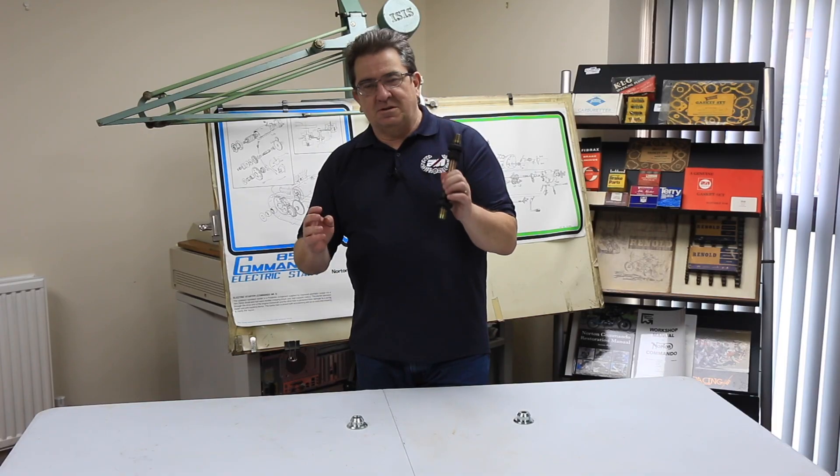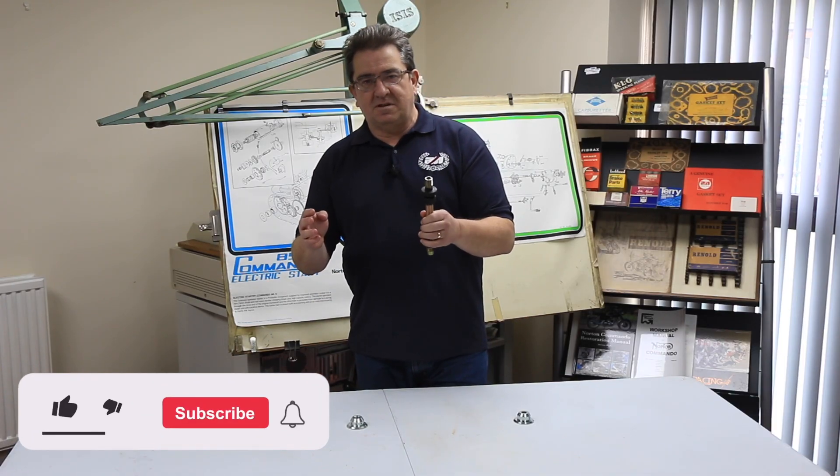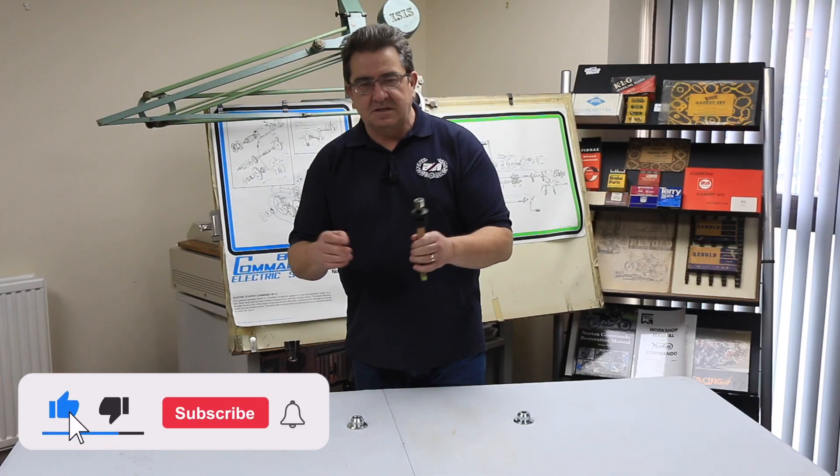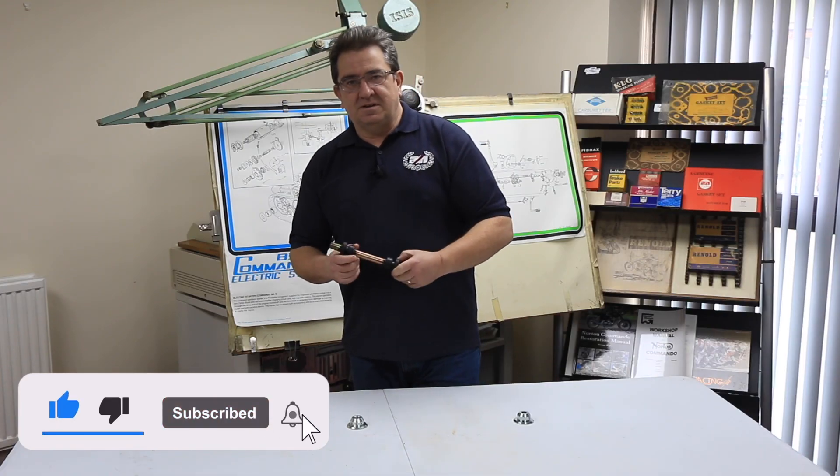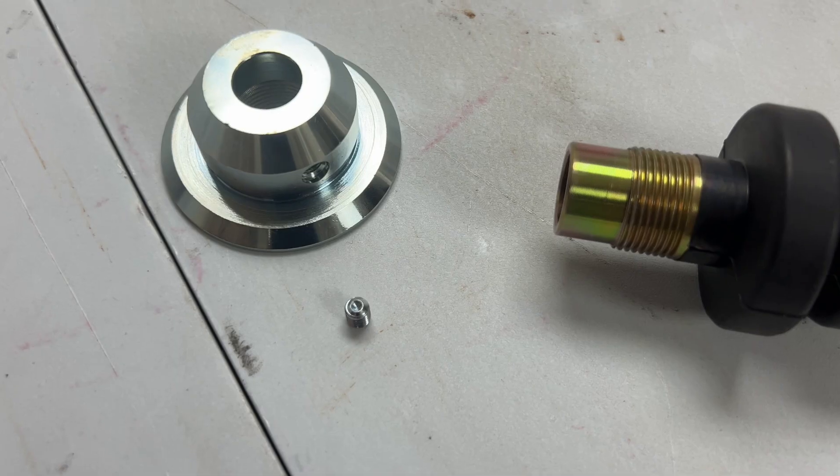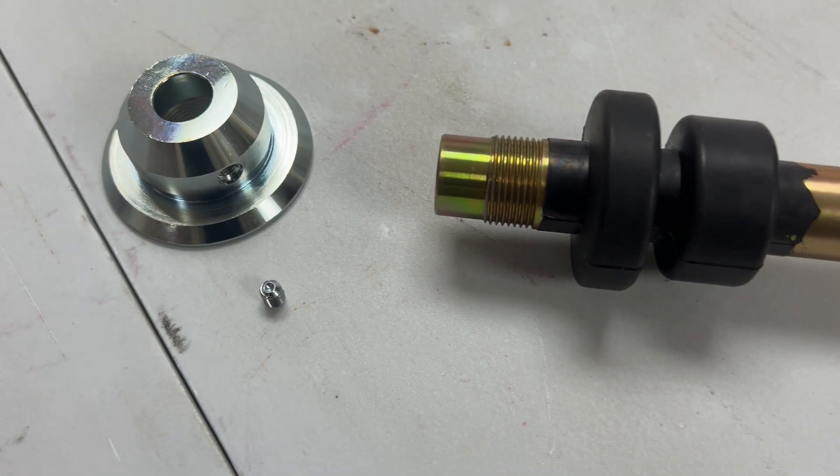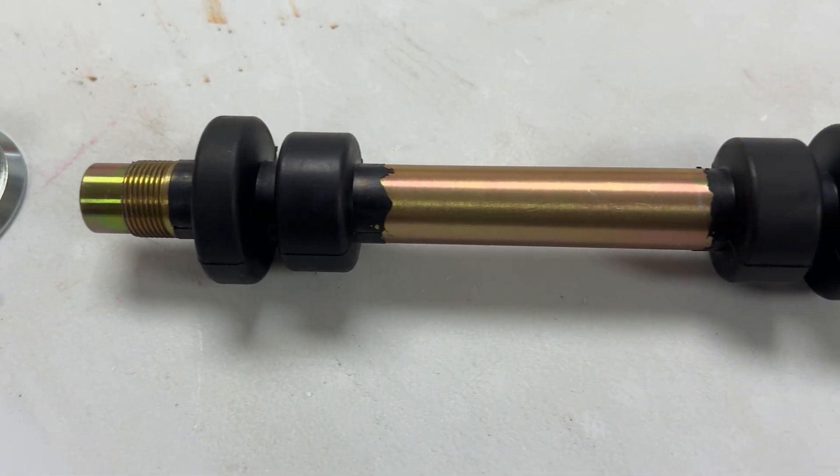Now I've done a video in the past for these which is a little bit more in depth than the one I'm just about to mention. We'll put a link to that one in the video. The question we get is I've put my isolastic mount together and it's too wide.